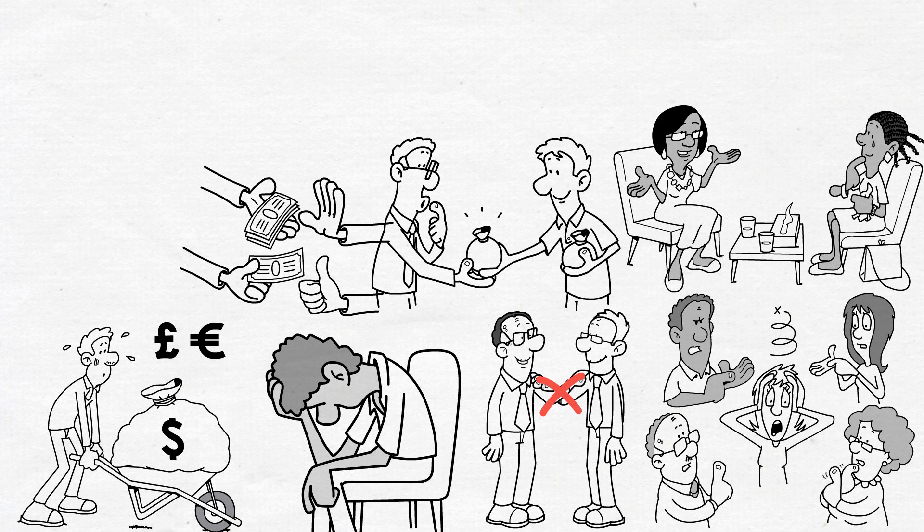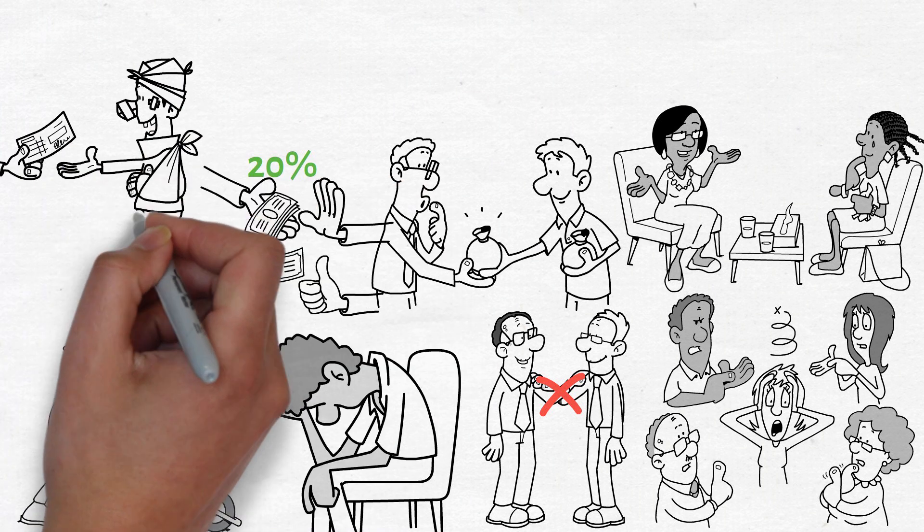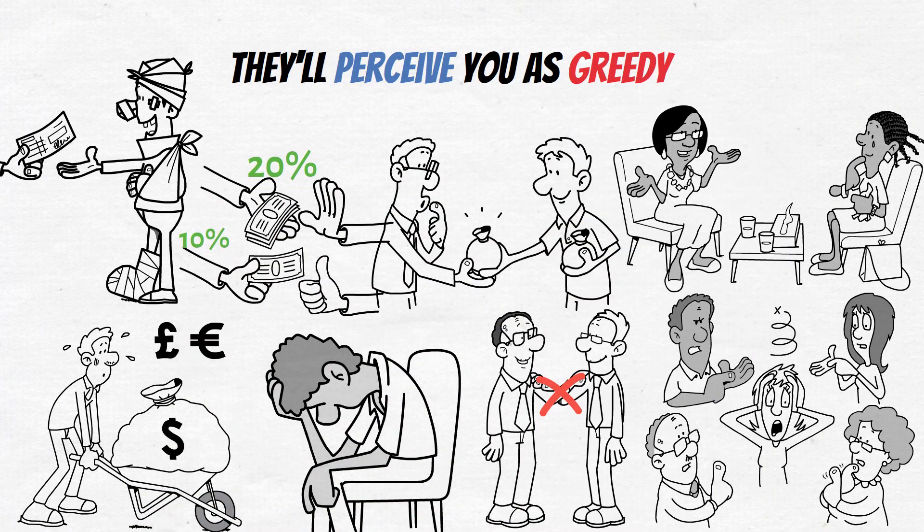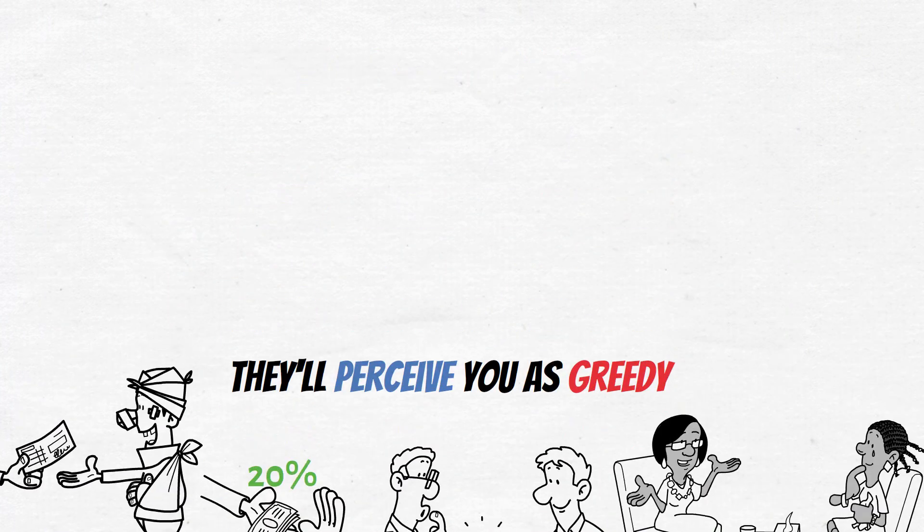For example, if you constantly donate 10% of your income, the jealous will call you a cheapskate because you're not donating 20%. And unless you're giving all of your money away to help end world hunger, they'll perceive you as greedy.